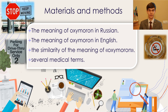Materials and methods. The concept of oxymoron in English and Russian languages was studied. In Russian, the unit oxymoron means a combination of contradictory notions, paradox, stylistic figure, stylistic figure or stylistic error, combination of words with opposite meaning — that is, a combination of incompatible.